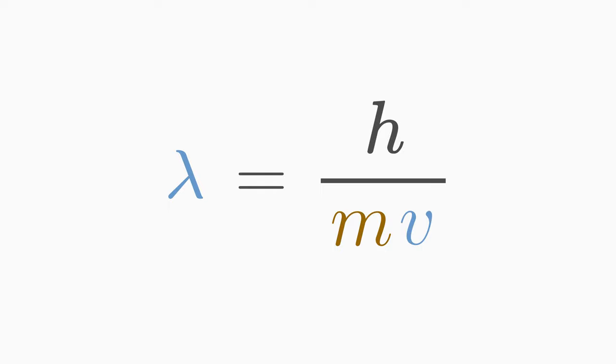From this equation you can see that fast and heavy particles, which therefore have a large momentum, have a shorter de Broglie wavelength than slow and light particles, which have a small momentum.